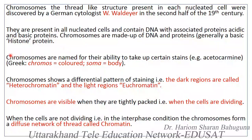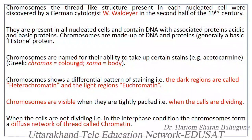The term 'chromosome' indicates that these thread-like structures can become colored or stained through certain dyes. An example of a dye used to stain chromosomes is Acetocarmin. These thread-like structures become colored, which is why they are called chromosomes — 'chroma' meaning colored and 'soma' meaning body — that is, a colored body present inside the nucleus.